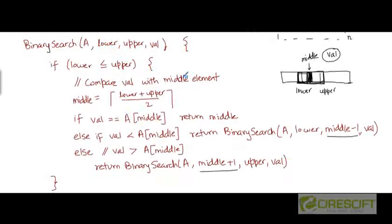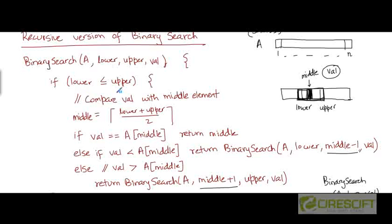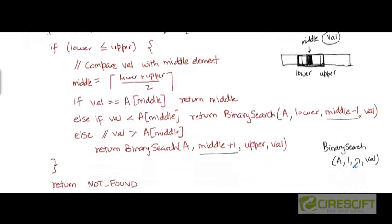So as we call binary search with parameters a, 1, n, and val initially, the function makes recursive calls to itself on narrower and narrower regions within the array, until it either finds the element we are searching for, or lower ends up being greater than upper, in which case it returns not found. Whatever the recursive call into the left or right half returns, we return as the result of the larger function.